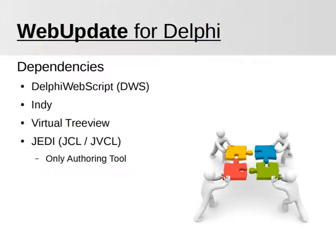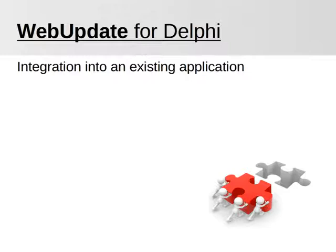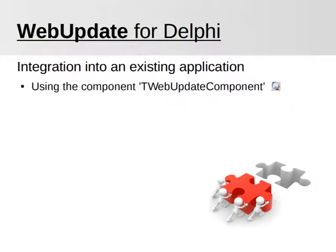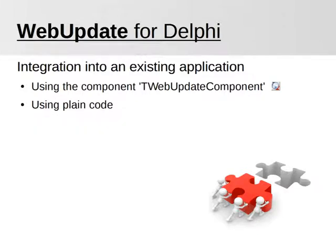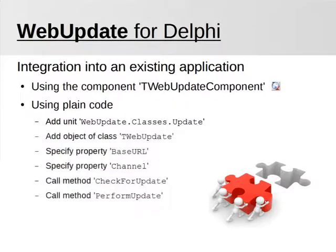In order to use the code in your application, let's have a look at how easy the integration is. The most Delphi-like way is by using a component, which is shipped in the library. It will be available after you have installed the included packages into the IDE. Add the component to your form or data module, specify a base URL and channel, and call the methods CheckForUpdate and/or PerformUpdate. In case you don't want to install the packages or use the component, you can also get this working using plain code: just add the unit WebUpdate.classes.update to the uses section, create an object of the class TWebUpdate, then specify a base URL and a channel and call the methods CheckUpdate and PerformUpdate.